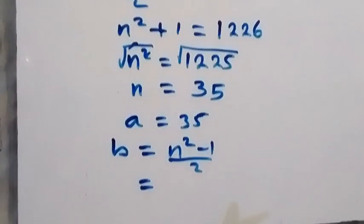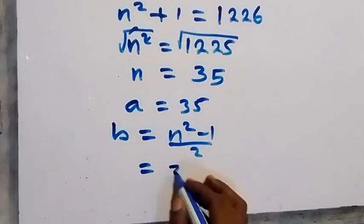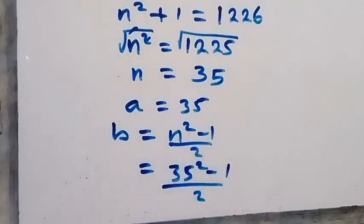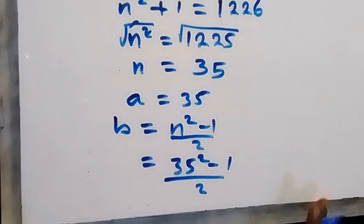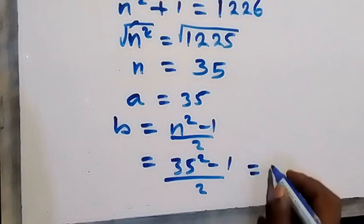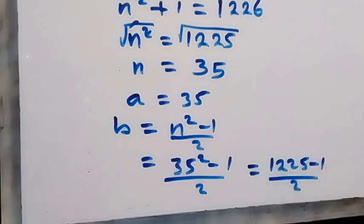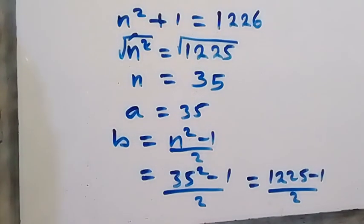be 35, so that will be 35 squared minus 1 over 2. And 35 squared gives us 1225, so we have this to be 1225 minus 1 over 2, and this will be 1224 over 2.